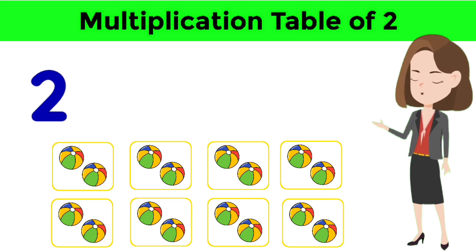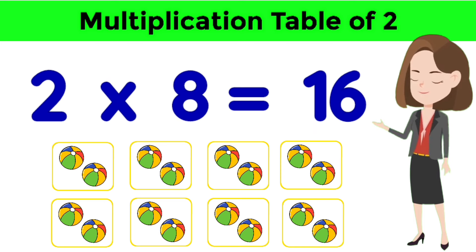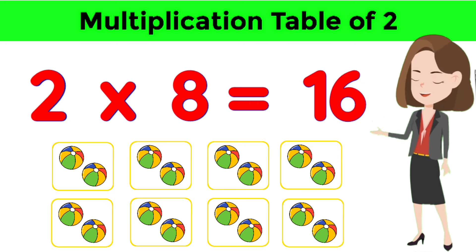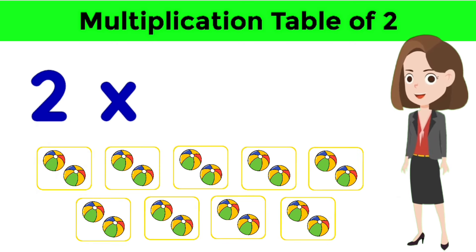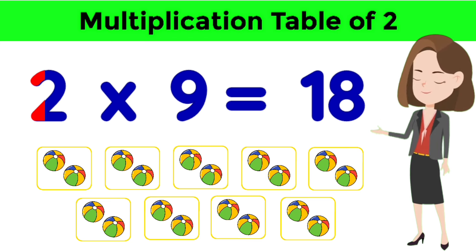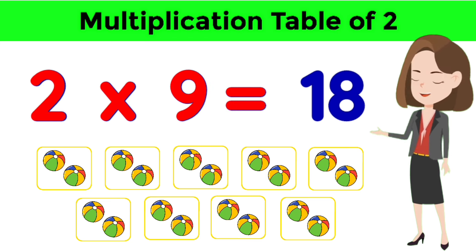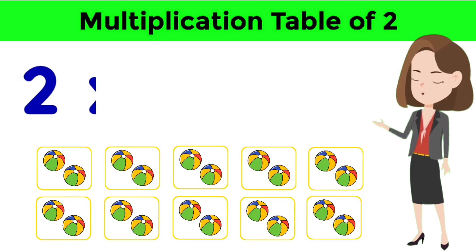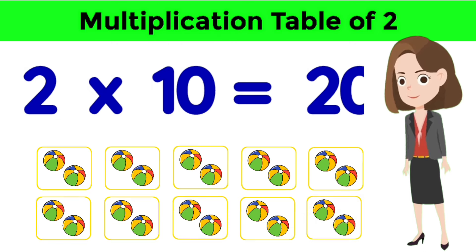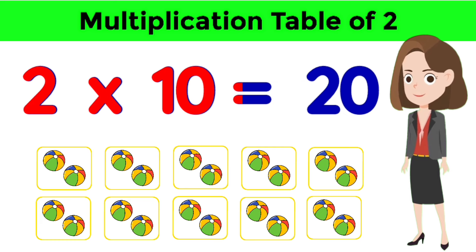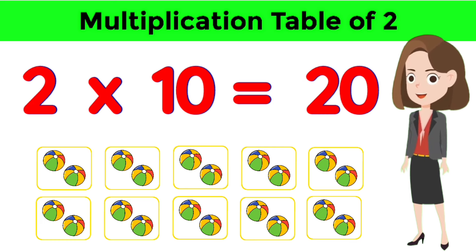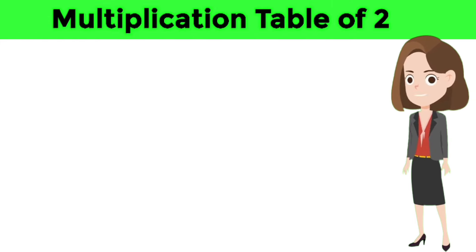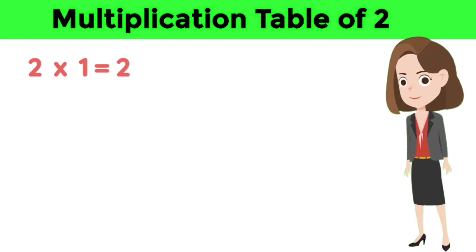Two eights are sixteen. Two nines are eighteen. And two tens are twenty. Now let's repeat the multiplication table of two.